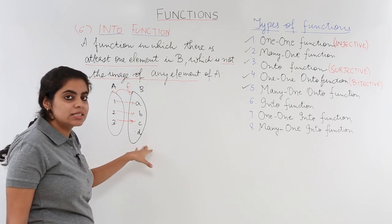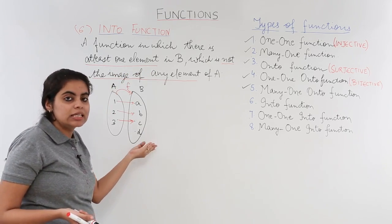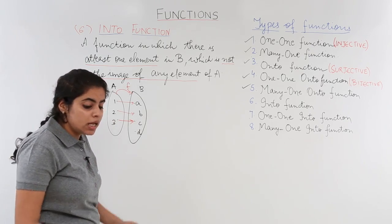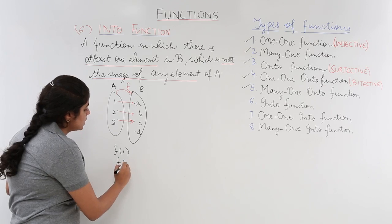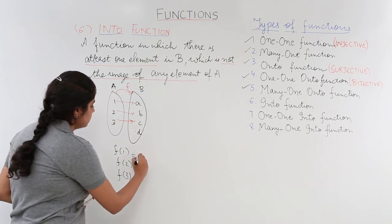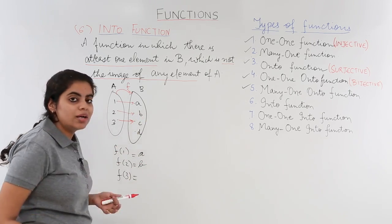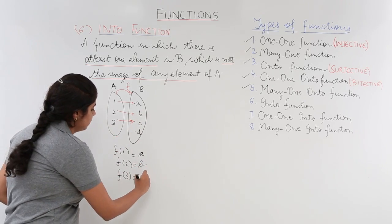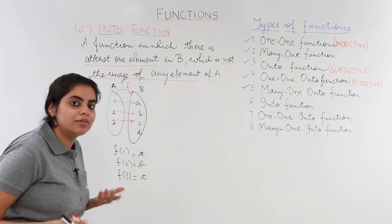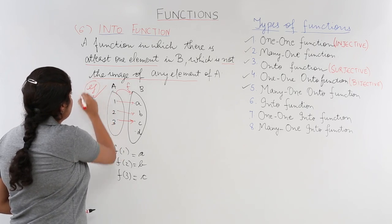Now move back to the definition, which says that there is at least one element in the second set which is not the image of any other element. We have d in the second set which does not have any pre-image; d is not the image of any of the elements. Let's verify: f(1) is a, f(2) is b, f(3) is c. We see that d does not come into the picture — d is unrelated since d is not the image of any element. So this is an example of an into function.